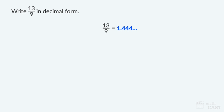Another way to write a repeating decimal is to write the repeating digit or group of digits only once and then draw a bar over those digits. So we can also write the decimal form of 13 ninths as 1.4 with a bar over the repeating digit 4. We use long division to write a fraction in decimal form, and writing the bar over the repeating decimal shows that it repeats forever — just like this pattern.